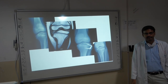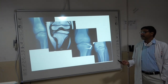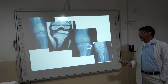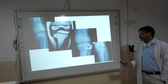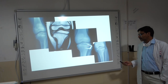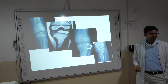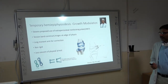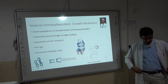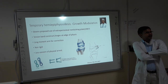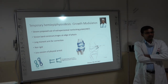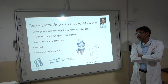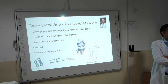An example of a staple: with varus deformity of the proximal tibia, a staple is inserted on the lateral side. The lateral side stops growing while the medial side continues, achieving gradual correction. In contemporary practice, permanent hemi-epiphysiodesis is not very commonly practiced; what is more commonly practiced is temporary hemi-epiphysiodesis, also called growth modulation.